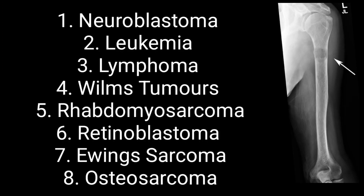Leukemia can also metastasize to bones in the pediatric population. It is a type of blood cancer usually seen in patients over 55 years, but it can also occur under 15 years of age.